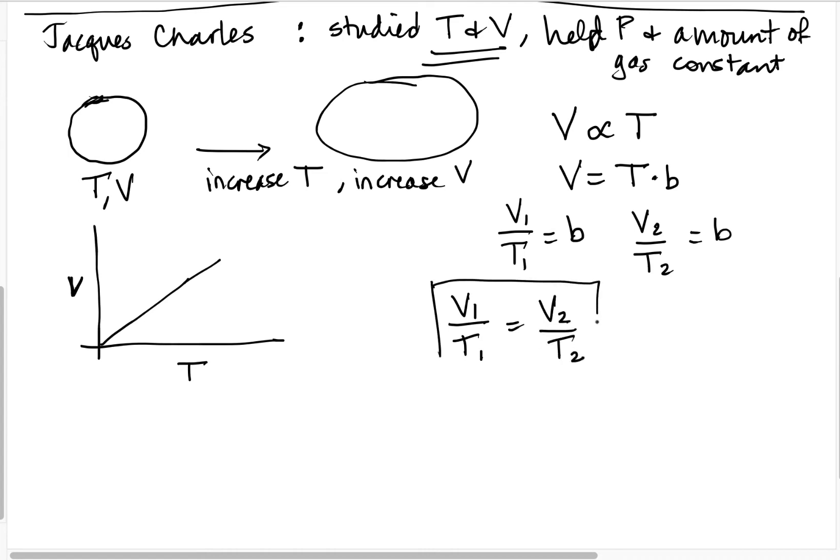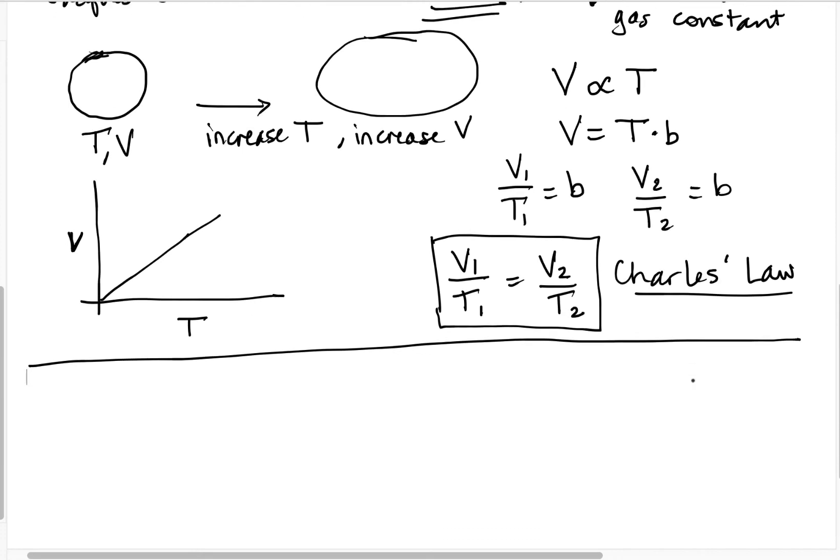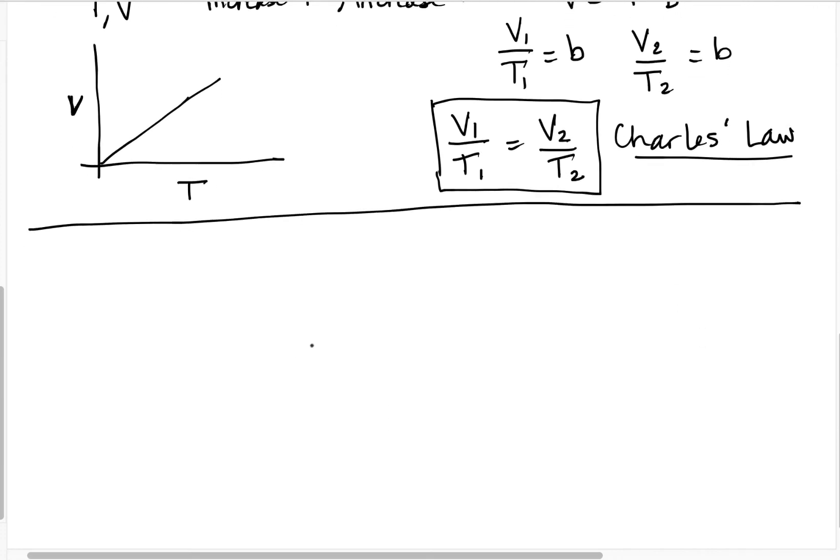If we write these together then, we can say V1 over T1 is equal to V2 over T2. And this is called Charles' Law. Of course, most people don't use the French pronunciation. They just would say Charles' Law, but it's Jacques Charles. So these are our first two gas laws out of four. Let's go ahead and take a break here from introducing new material and look at a couple of practice problems where we can use Boyle's Law and Charles' Law.